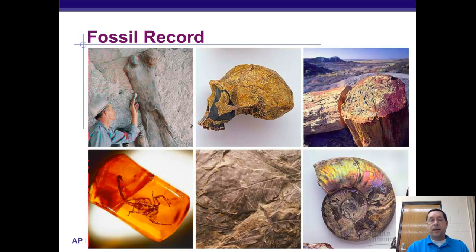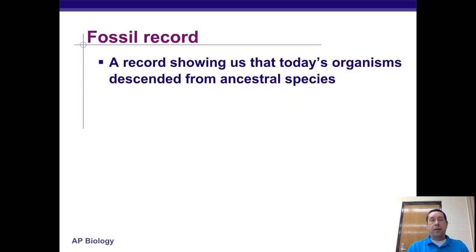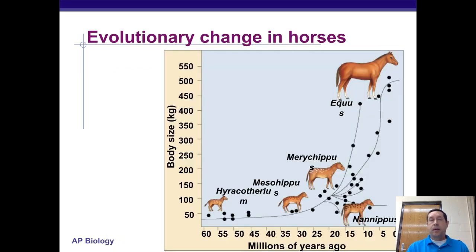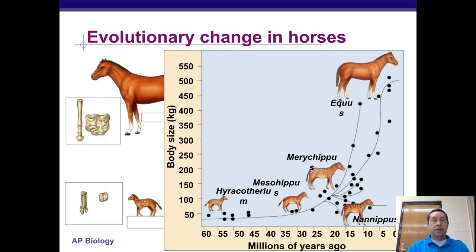Here are some different types of fossils — you can see an amber fossil, petrified wood, and so on. The fossil record shows us that today's organisms descended from ancestral ones. We can use this information to create things like cladograms — for example, showing evolutionary changes in horses, specifically in body size and how that relates to the structure of their skeleton.